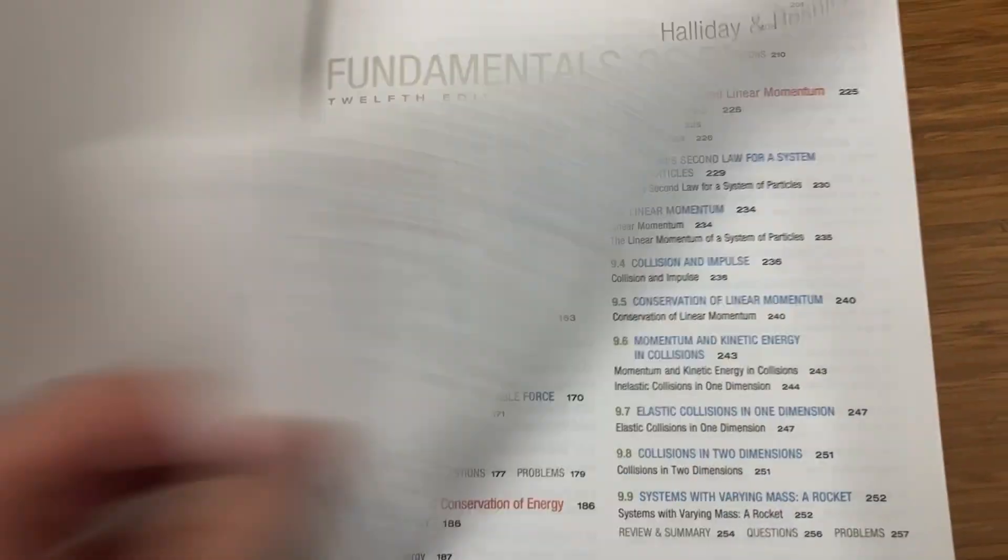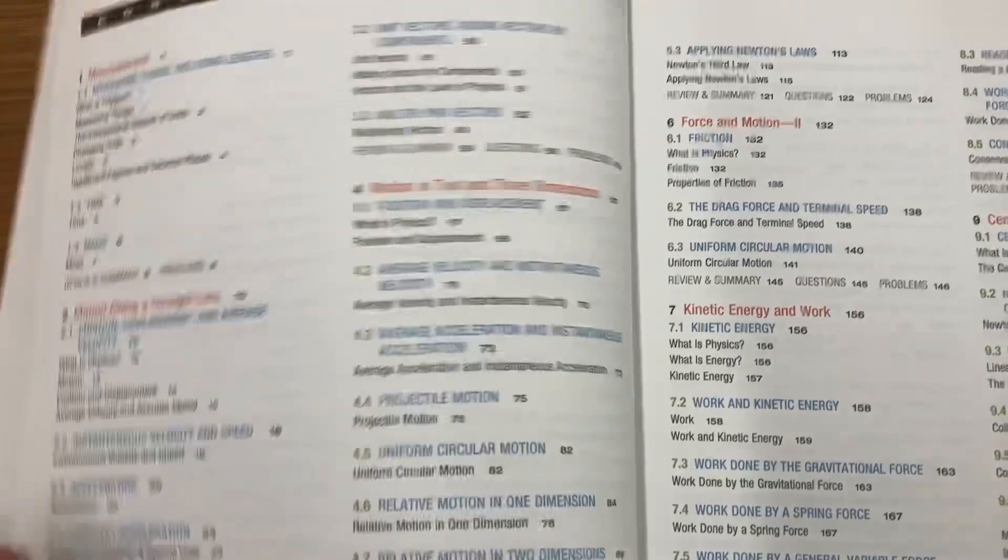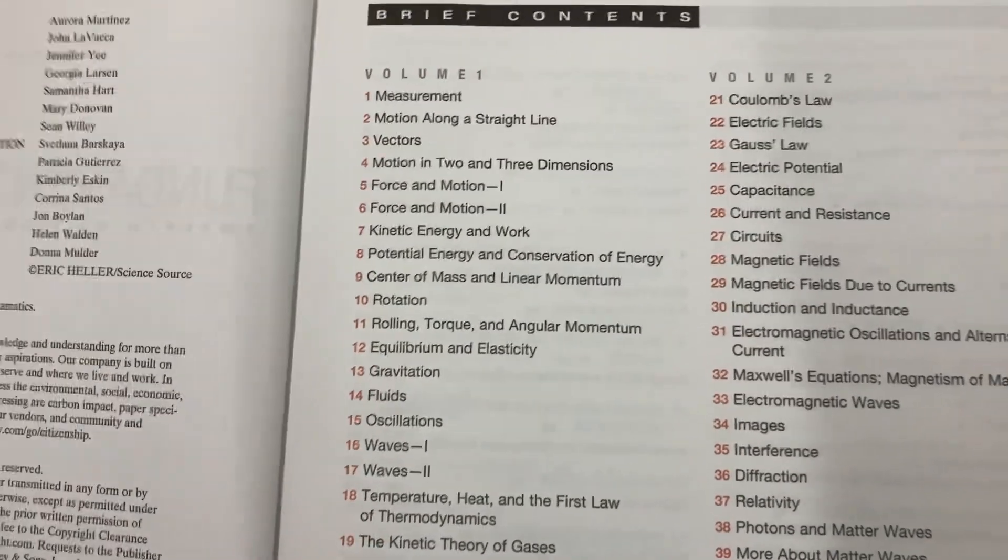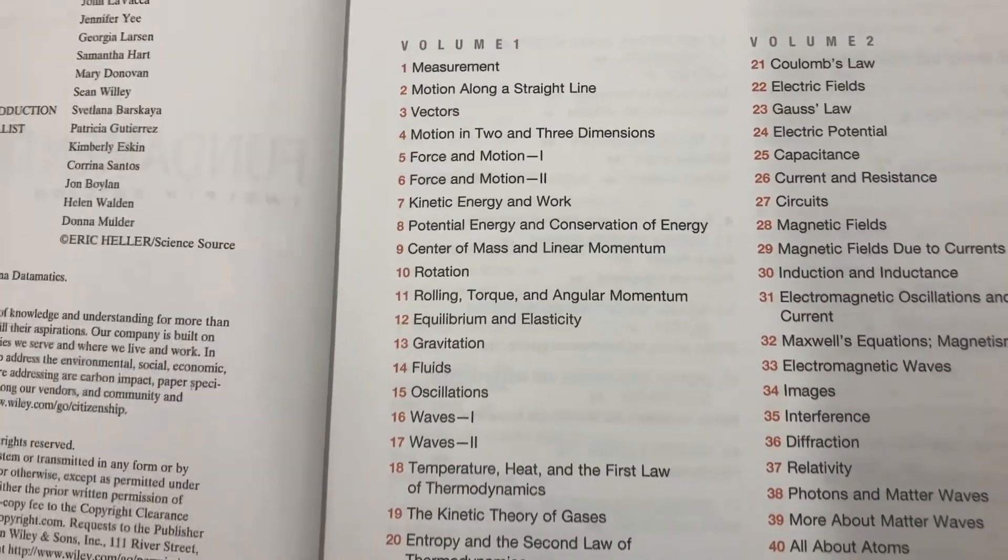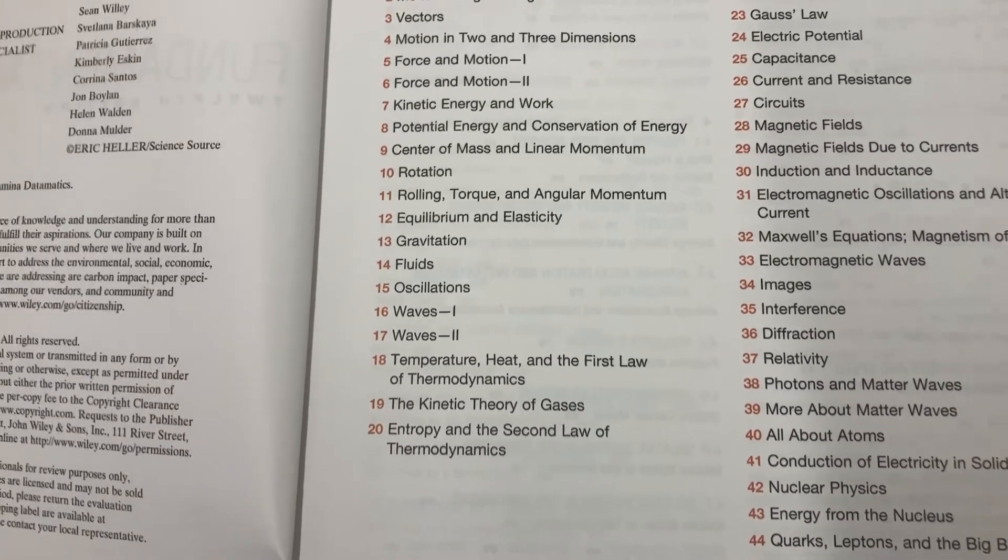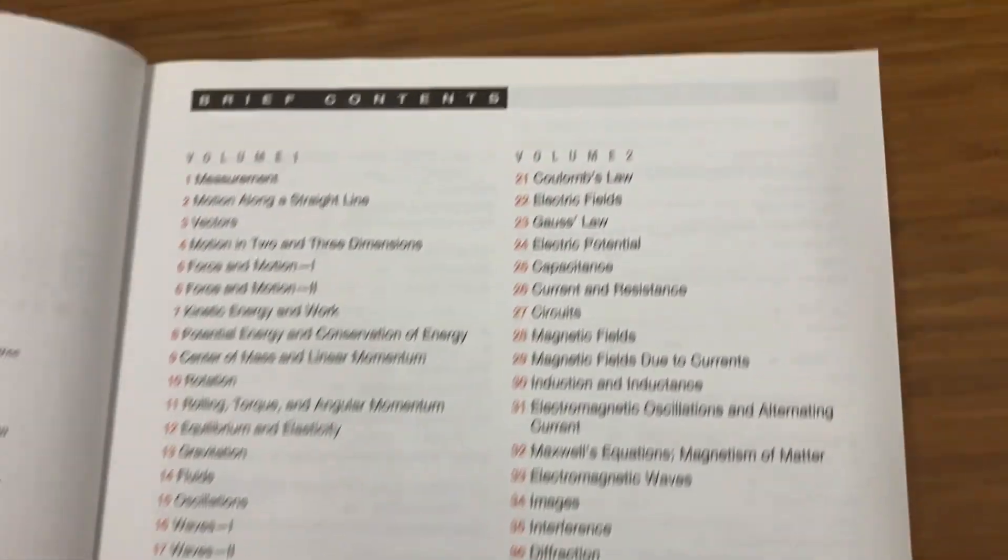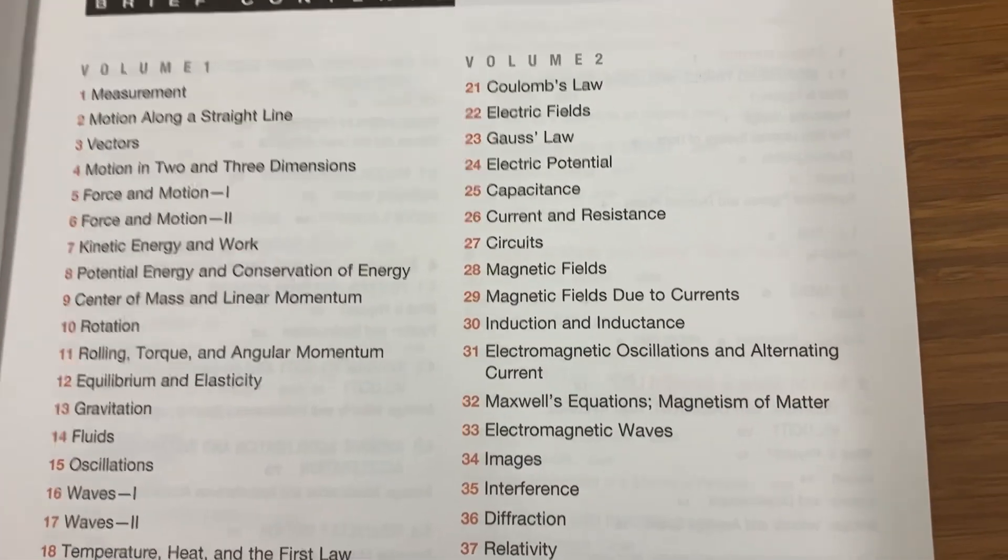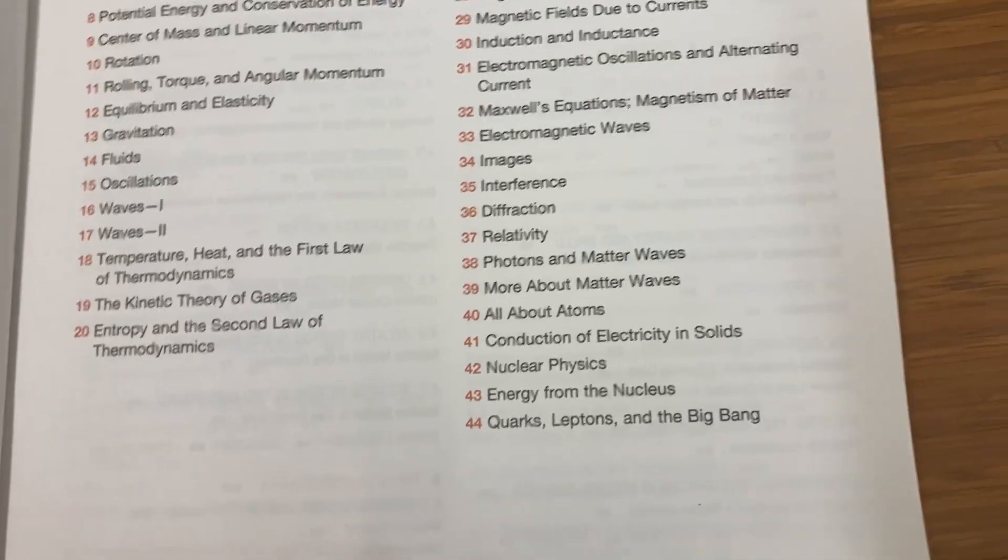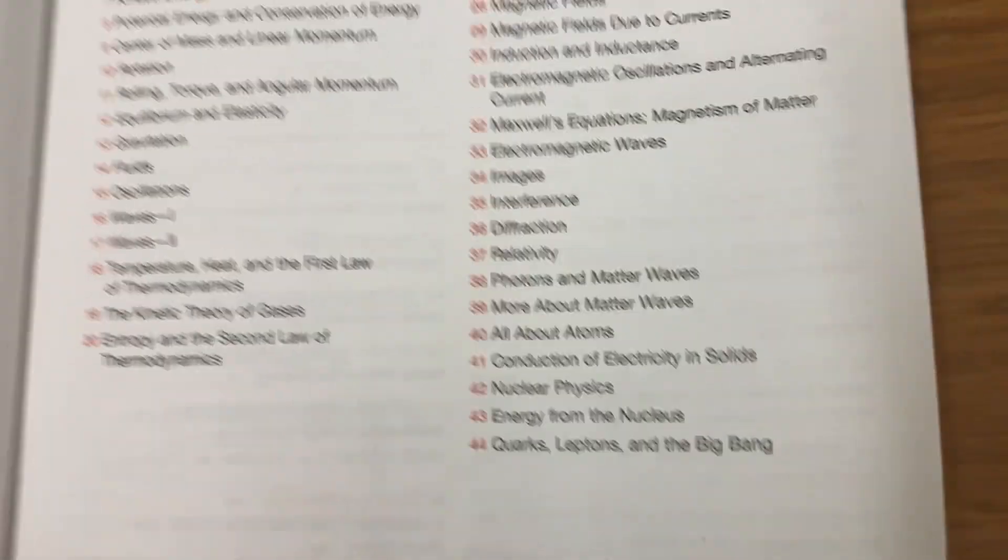So let's see what kind of cool things they have in here. Naturally we're going to have everything from regular physics - oh there's two volumes. You got measurement, vectors, forces, kinetic energy, rotation, torques, gravitation, fluids, waves, all sorts of crazy stuff. Electricity, magnetism, diffraction, photon nuclear physics, quarks and leptons, and the big bang.